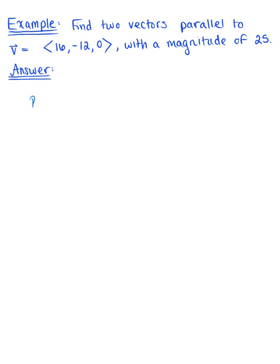So let's just quickly recall that we know two vectors are parallel if they're scalar multiples of each other. So if vector u equals c times vector v, such that c is some real number, then u and v are parallel.